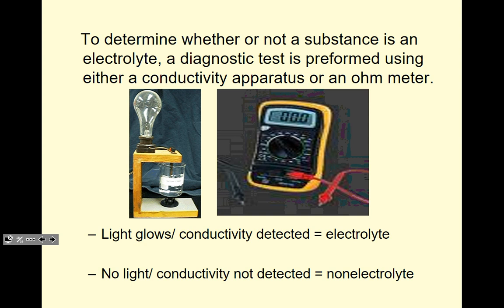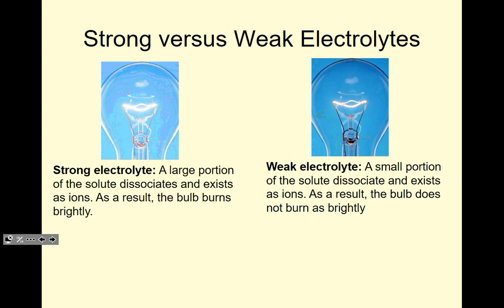To determine whether a substance is an electrolyte, a diagnostic test is performed using a conductivity apparatus or an ohmmeter. You can also attach a light bulb and two metal probes and place them in the solution — if the bulb lights up, it's an electrolyte; if it doesn't, it's a non-electrolyte. If using a meter, the gauge or screen will indicate movement of electrons if conductivity is detected.